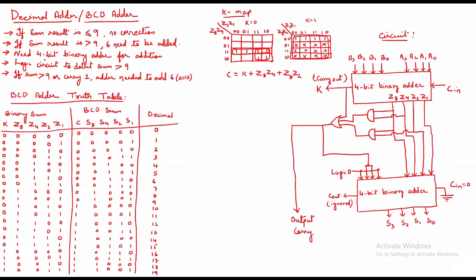The sum coming out after addition may be less than or equal to 9, or greater than 9, so I need a logic circuit to detect whether the sum is greater than 9 or not. Also, if there is a carry, the adder needs to add 6, which in binary format is 0110. So we need two binary adders — one to get the sum result, and one more if correction is required — along with a logic circuit.